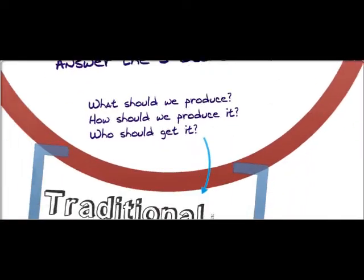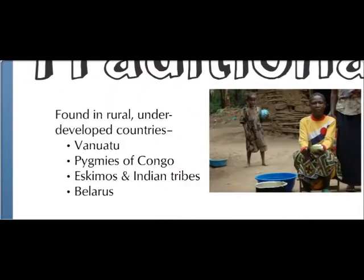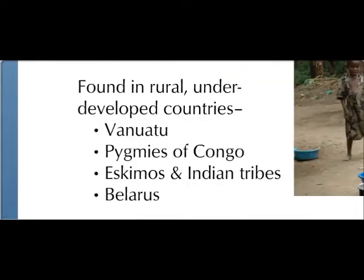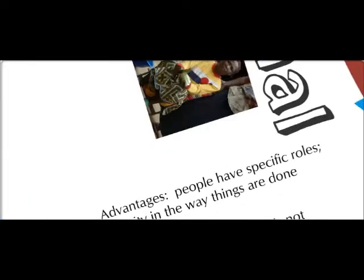The first economic system we can talk about is a traditional economy. Traditional economies are found in rural underdeveloped countries — like the pygmies of the Congo, Eskimos, Indian tribes — very small groups. In this kind of economy, customs govern the economic decisions that are made, so they do things based on the way they've always done it.